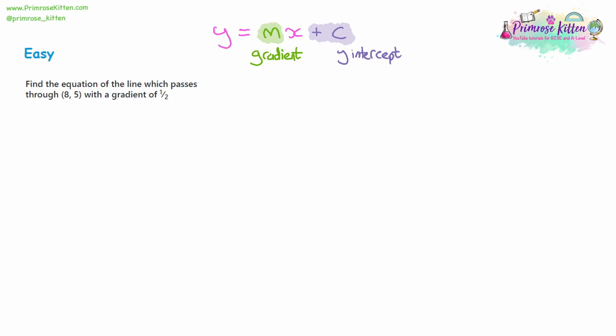We need to find the equation of the line which passes through the point (5, 8) and has a gradient of a half. So straight away we write down the format: y equals mx plus c. We know the gradient is a half because we've been directly told that in the question, so we swap M for a half. So far we have y is equal to a half x plus c.